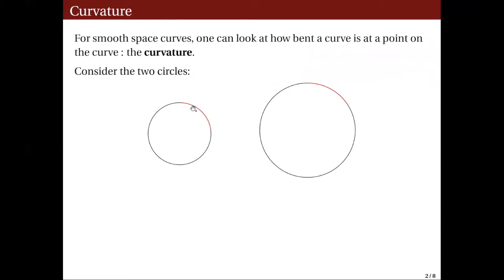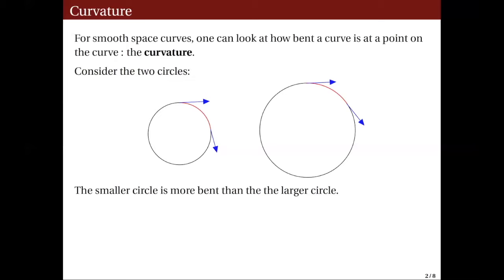The arc on the smaller circle is more bent than the arc on the larger circle. To justify that conclusion, we can compare how the tangent vectors to this arc move from one point to another. This is the tangent vector to this arc at the initial point, and this is the tangent vector at its terminal point. On the other hand, this is the tangent vector to this arc at the initial point, and this is the tangent vector at the terminal point.